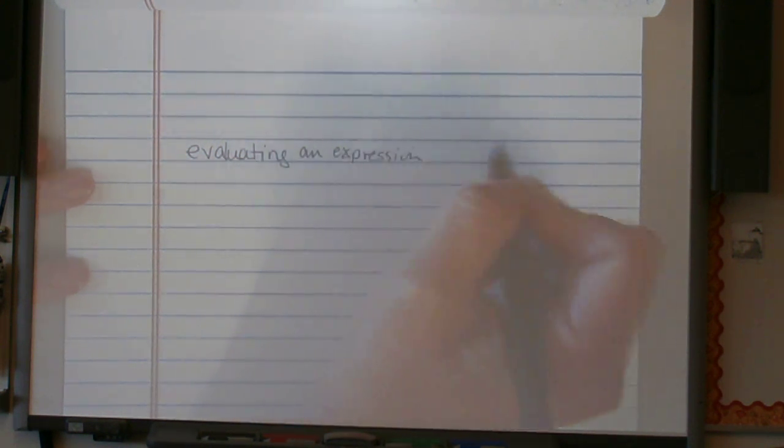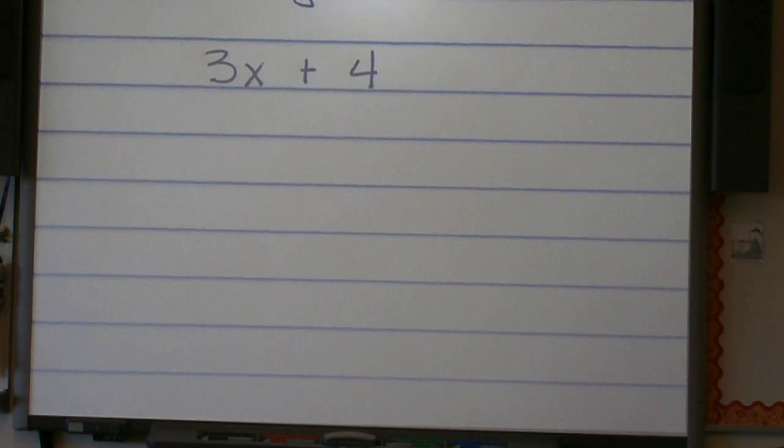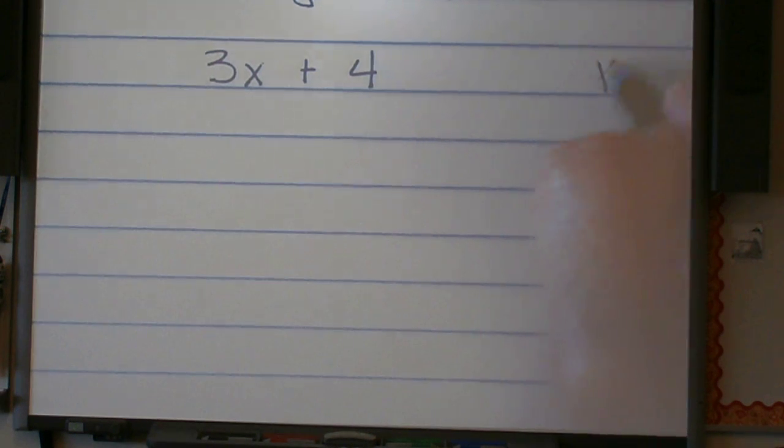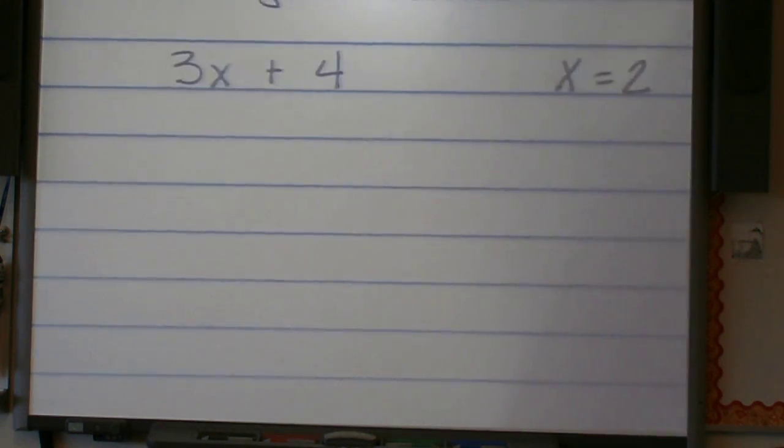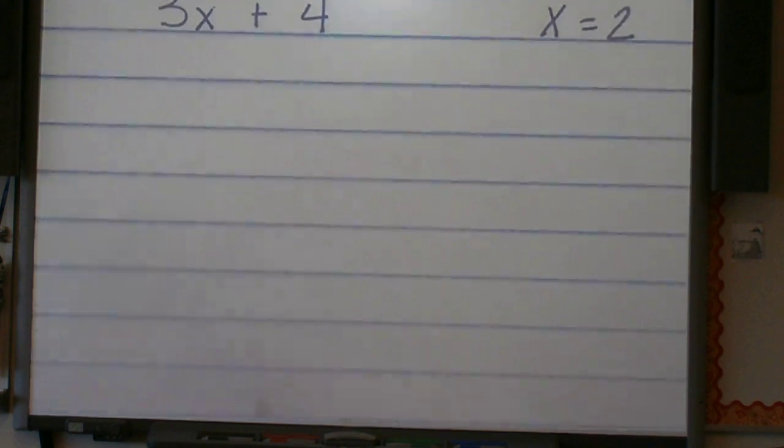When we evaluate an expression, we have 3x plus 4. This is an expression. If we are given some value for x, maybe x is equal to 2, then we can evaluate this expression and simplify it even further. We cannot solve it, we can just evaluate it.